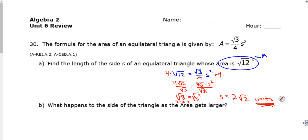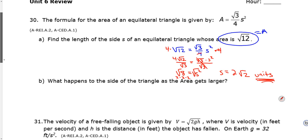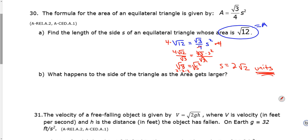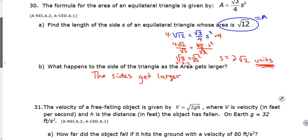And again, the side lengths and the one-dimension things, they're all in units that are in the first power. Area is in the second power. Volume is third power. Everything else is just in the first power. So it says, what happens to the side of the triangle as the area gets larger? Well, again, this is one of those common sense things. If the shape's getting bigger, the side's getting bigger also. So the sides get larger. The area's getting bigger, the side's getting bigger.